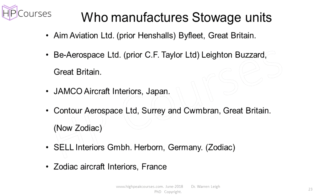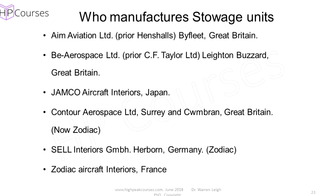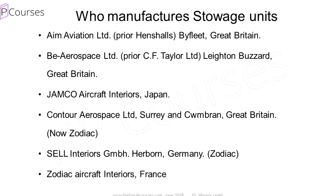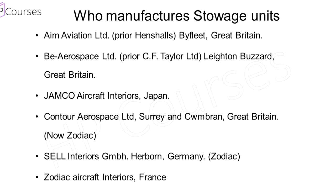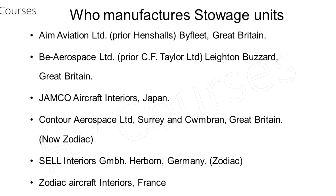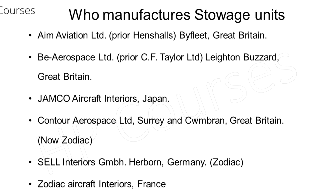There are a variety of aircraft composite interior manufacturing companies. Here is a list of some of the most popular, or well-known ones. AIM Aviation was known as Henshawls — they're based in Byfleet in Surrey in the United Kingdom. BE Aerospace was known as CF Taylors, based in Leighton Buzzard in the United Kingdom. JAMCO of Japan. Contour Aerospace, who are now Zodiac, based in the United Kingdom. Cell Interiors, based in Germany or Austria. Zodiac are based in France.